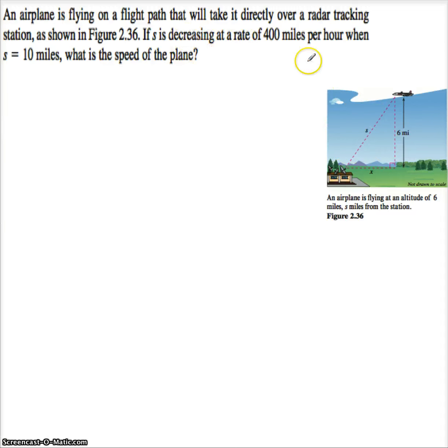If S, and S is the distance between the radar station and the airplane, is decreasing at a rate of 400 miles per hour when S is 10, what is the speed of the plane?